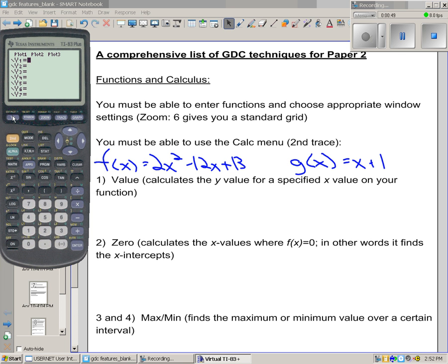So to start off with, let's put these two functions in our GDC: 2x squared minus 12x plus 13. Oh dear, I didn't put squared. There we go. And the function x plus 1. I can graph that with my standard window by going to zoom 6. There we go.